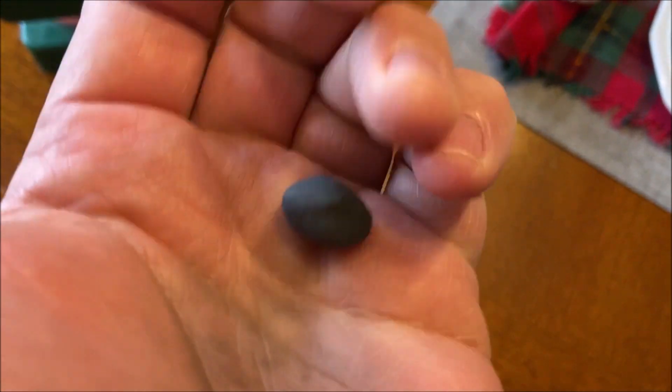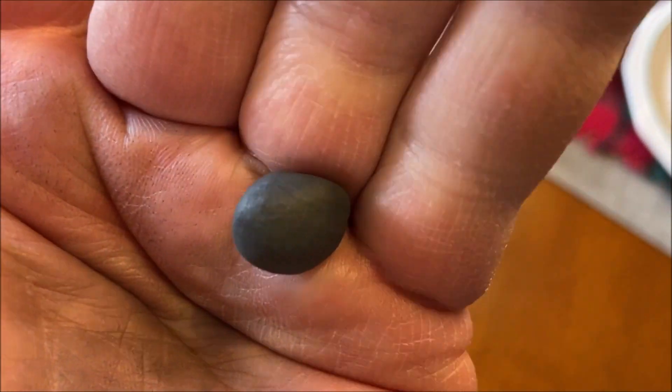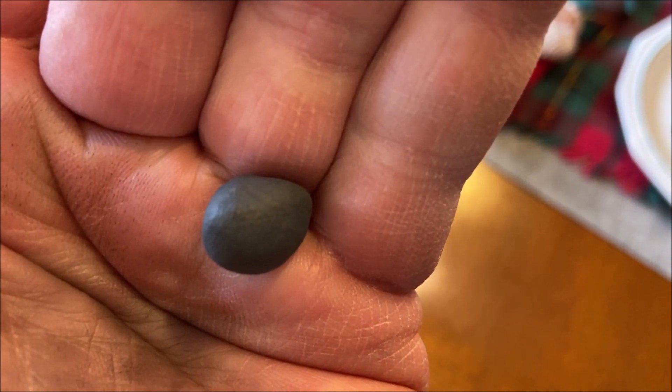Now the little nugget is one consistent color. I'll go ahead and form that around the shaft and we're almost done.